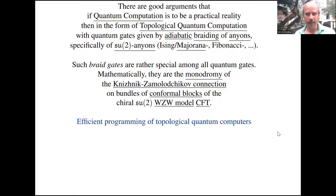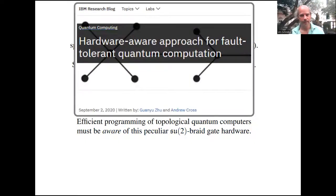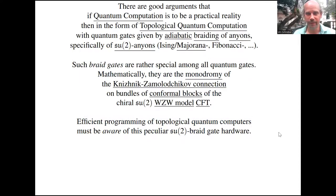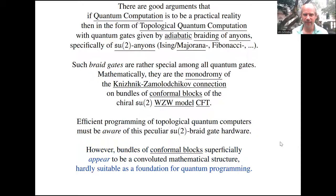It follows that programming topological quantum computers will have to be aware of this peculiar nature of anyonic braid gates. By aware, I mean in the sense of hardware awareness that has recently become commonplace in quantum computing. However, bundles of conformal blocks are rather convoluted mathematical structures, and it may appear they're hardly suitable as a foundation for quantum programming. If you open textbooks explaining these four lines, you'll find hundreds of pages before you have that braid representation.